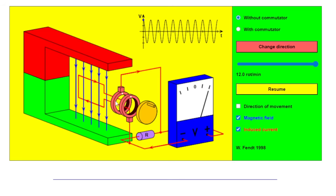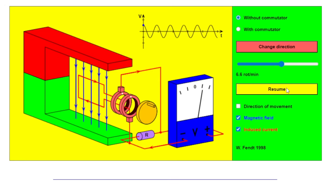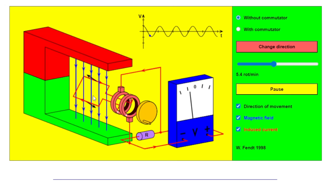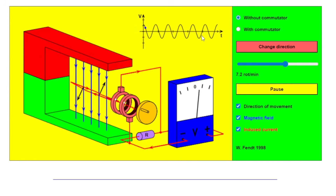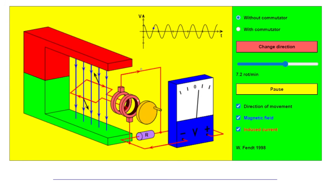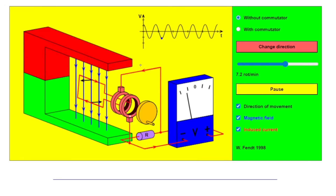Looking at the simulation, we're now using slip rings, not the split ring — so this represents an AC generator. Starting the simulation, we can even see the direction of movement of the coil, the armature. Take a look at the external circuit — there's an arrow indicating the direction of the induced current in the external circuit.